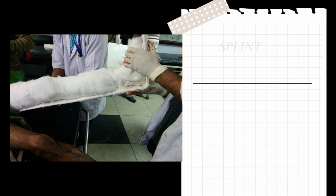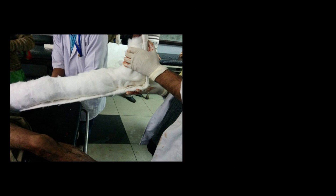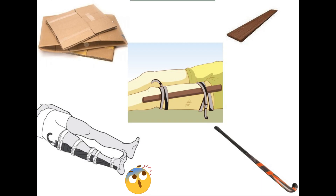Welcome. Today we are going to learn something about splints. A splint can be defined as any device which is used for support or immobilization of a limb, joint, or spine. Splints could be conventional or non-conventional. These are some photographs of non-conventional splints, like a piece of cardboard, a piece of plywood, a hockey stick, an umbrella, or a simple wooden stick.